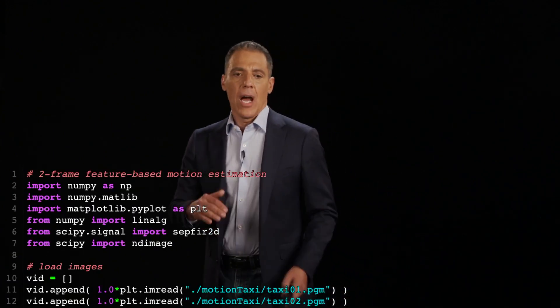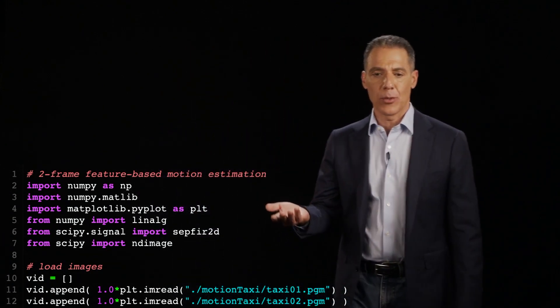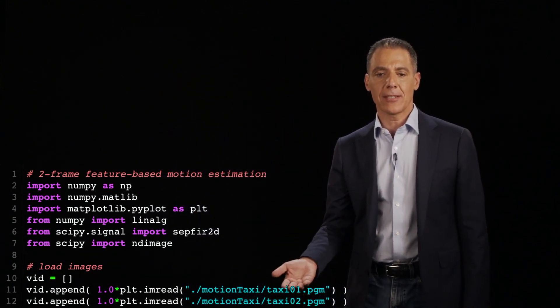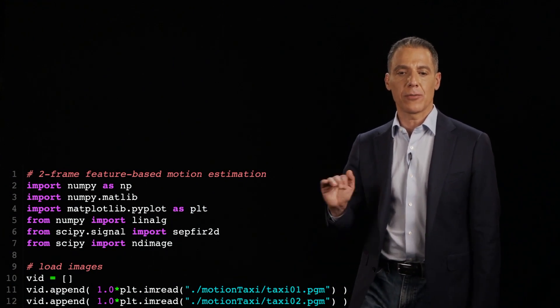All right, let's implement feature tracking. So I'm going to do this just for two frames for now, because that's the simplest way to do it. I'm going to load in two frames from our taxi sequence, and we'll append that into that little data structure vid, so frame one, frame two.